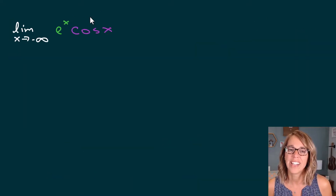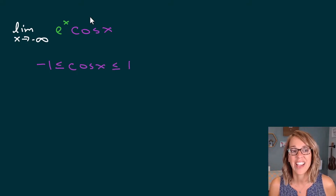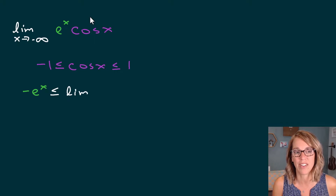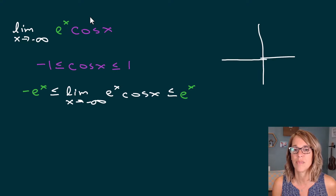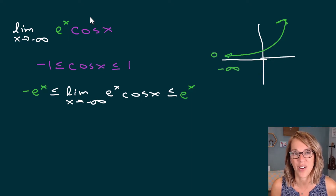For this one, we're looking at the limit as x approaches negative infinity of e to the x cosine x. I still have that cosine in there, so I want to start with the statement that cosine, same as sine, is sandwiched between negative one and one. I can now multiply in e to the x. As I multiply in e to the x, I get negative e to the x on the left, less than or equal to e to the x cosine x, less than or equal to e to the x on the right. If I look at the graph of e to the x, as I'm approaching negative infinity, my e to the x values are approaching zero.